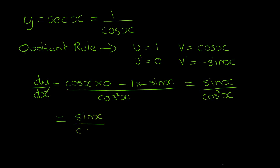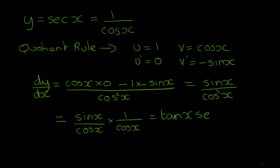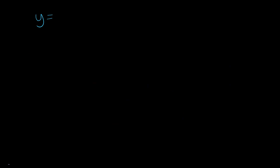This can be split to get sine x over cos x times 1 over cos x, which gives us tan x times sec x. Now cot x, which is 1 over tan x, means it's cos x over sine x.